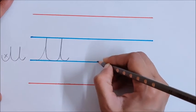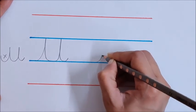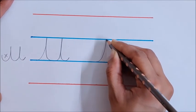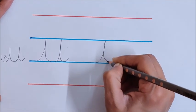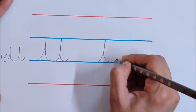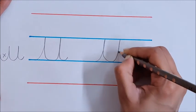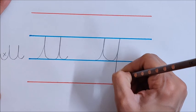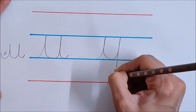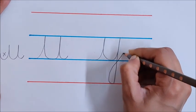Just like U, go up, touch the blue line, come back on the same line, again touch the lower blue line, go up, come down, touch the red line, and a tail.